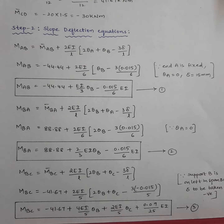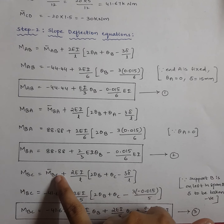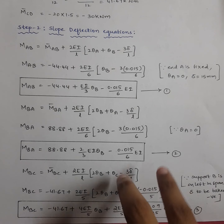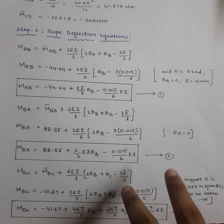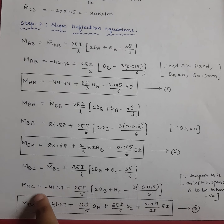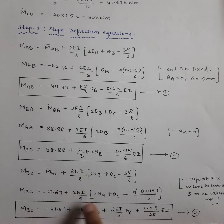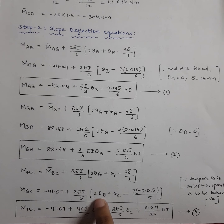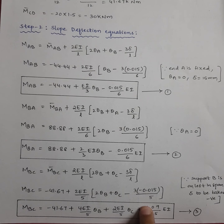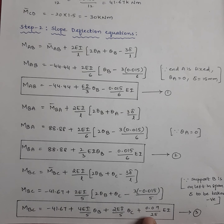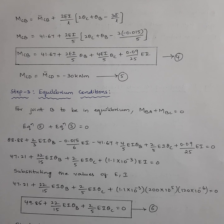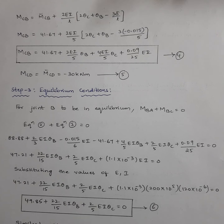For M_BC: M̄BC + (2EI/L)(2θB + θC − 3Δ/L). In span BC, B is on the left-hand side, so substitute delta as minus 0.015. Substitute the value of M̄BC, L = 5, 2θB, θC, and 3 × (−0.015)/5. This gives equation 3.